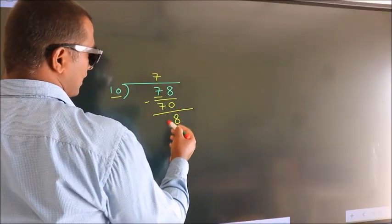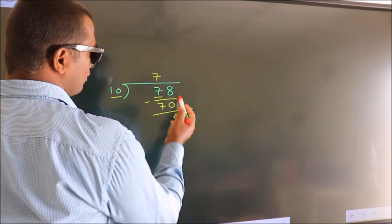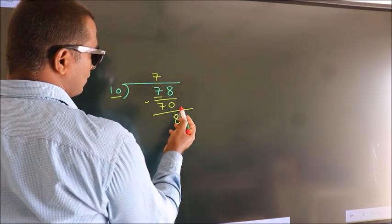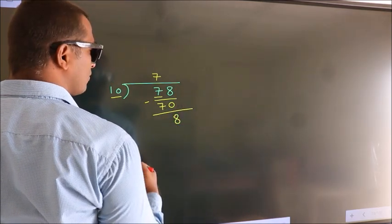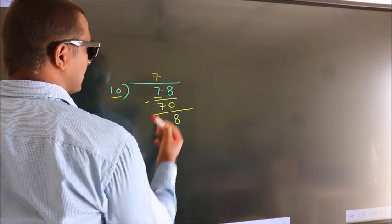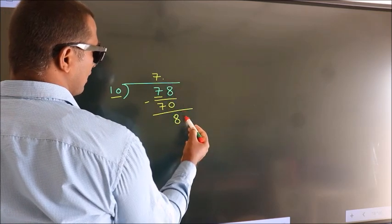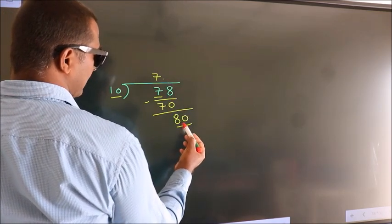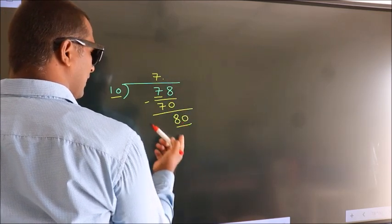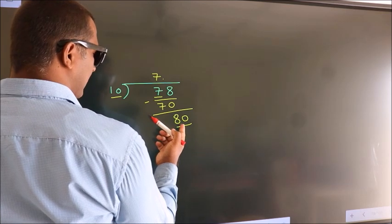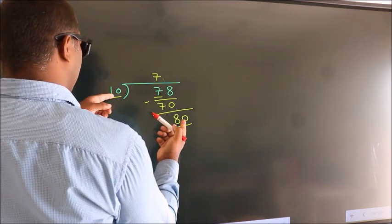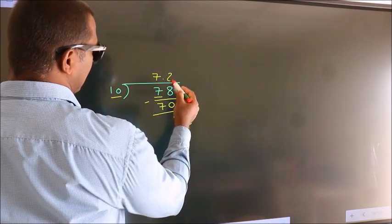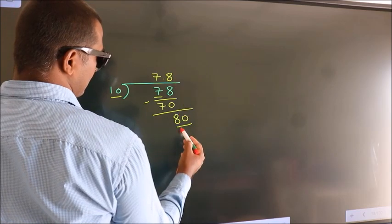After this, there are no more numbers to bring down. So what we do is put a dot and take 0, making it 80. In the 10 times table, 10 eights is 80.